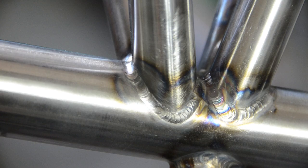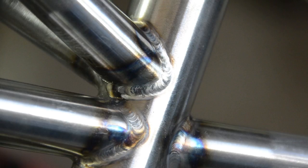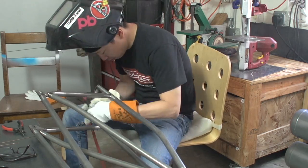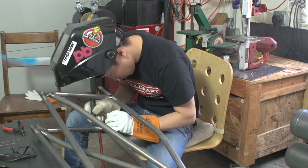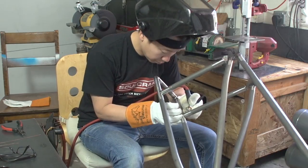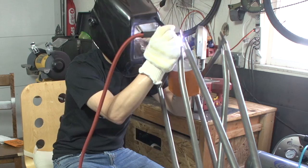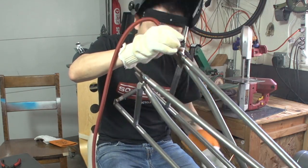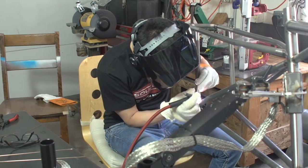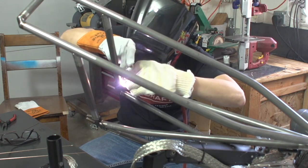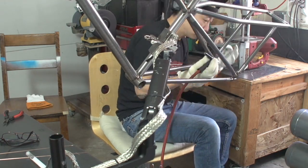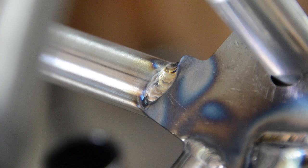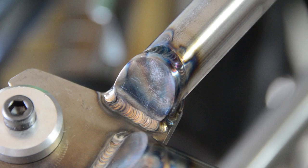All right, the seat tube junctions are all welded and the ugliest part is kind of hidden right inside there, so you can't see it, which is good. And now I'm welding the rear supports on, getting those welded to the dropouts. And here's those welds.